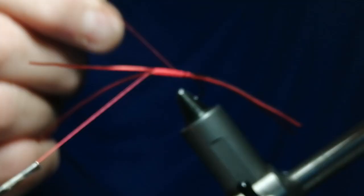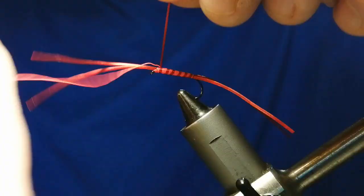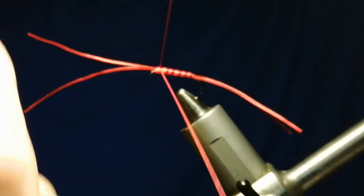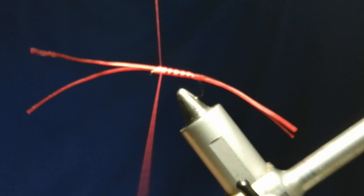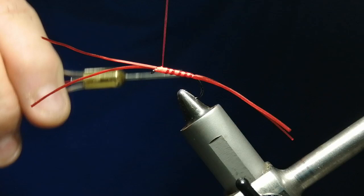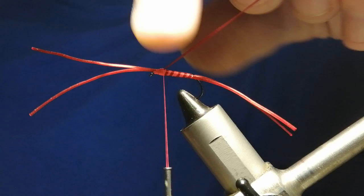Now we'll just rib up the body and get my thread over the top. Snip it off.